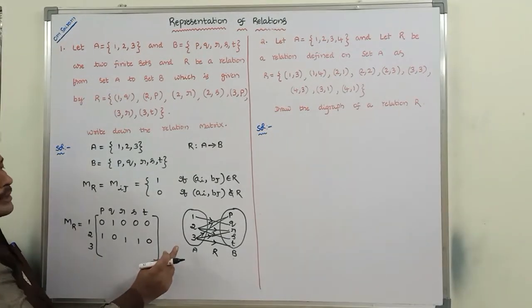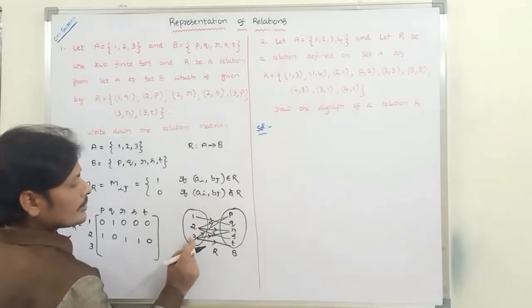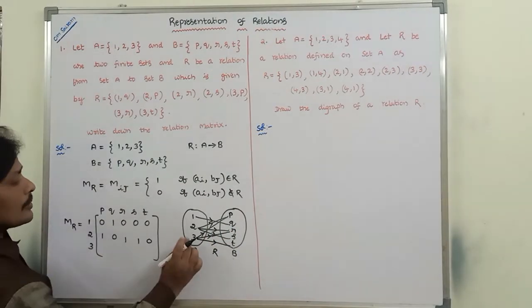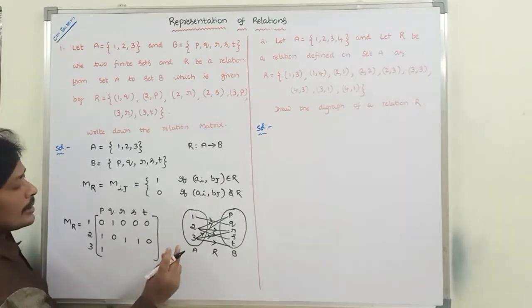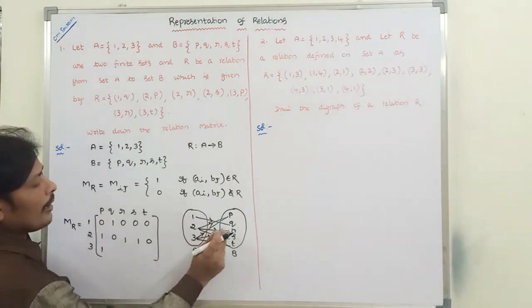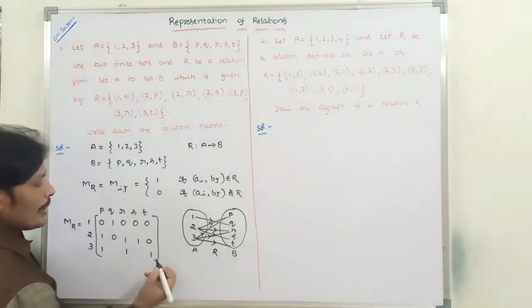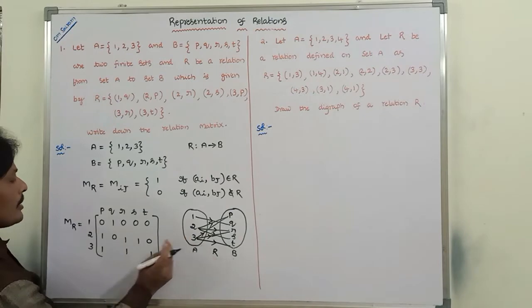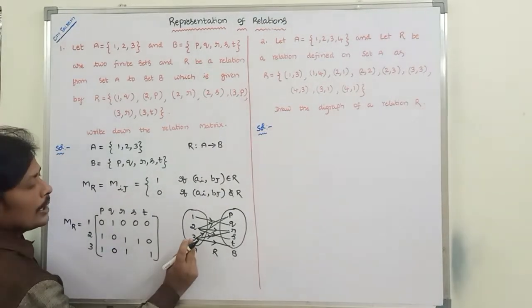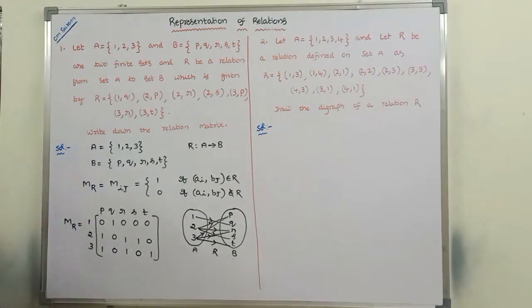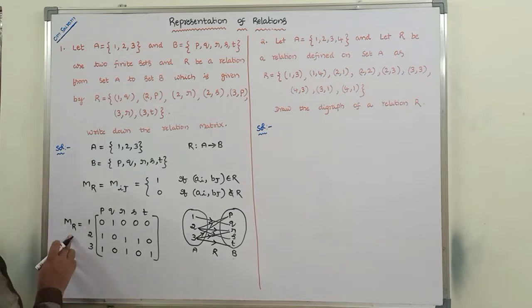For element 3: 3 is related with P, so we write 1. 3 is related with R, we write 1. 3 is related with T, we write 1. But 3 is not related with Q, we write 0, and 3 is not related with S, we write 0. So this is called the relation matrix, M_R.